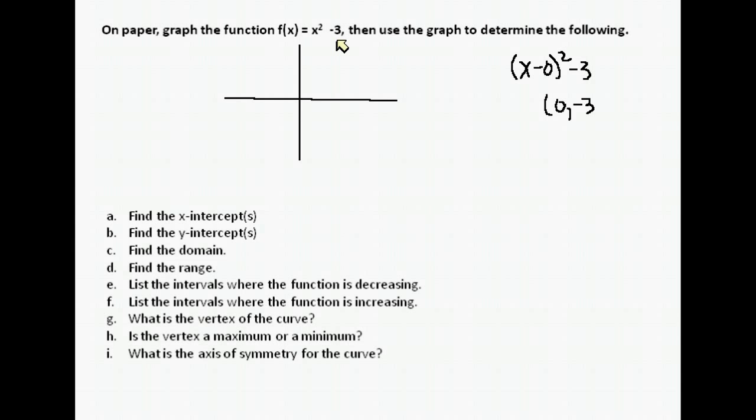Our vertex would be at (0, -3). You can always just plug points in to graph parabolas, but you have to make sure you get the vertex in there somewhere, so you want to know where the vertex is. Let's try and find our x-intercepts. X-intercepts are where f(x) equals zero.